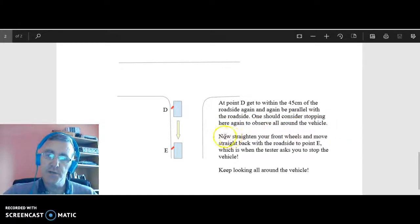Now to straighten your wheels at this point, point D, and move straight back with the roadside to point E, which is when the tester asks you to stop the maneuver. Generally the tester will ask you to come back from the corner at least three car lengths, at least an average of three car lengths. Sometimes they might go back further. Again, keep looking all around.